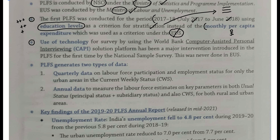Yeh jo technology ka use kiya gaya for the survey, usse use kiya gaya by using World Bank's Computer Assisted Personal Interviewing (CAPI) solution platform. Is platform ka use kiya gaya — World Bank ke dwara yeh cheez hai. Yeh cheez aapko prelims mein bhi aa sakti hai: Computer Assisted Personal Interviewing solution platform — yeh World Bank ka hai. PLFS mein jab hum log technology ki madad chahte hain, precise way mein data collection ke liye, toh uske liye hum log CAPI ko use karte hain, jo ki World Bank ka ek aisa technological network hai, jiske wajah se data collection under PLFS zyada behtareen ban jaata hai.